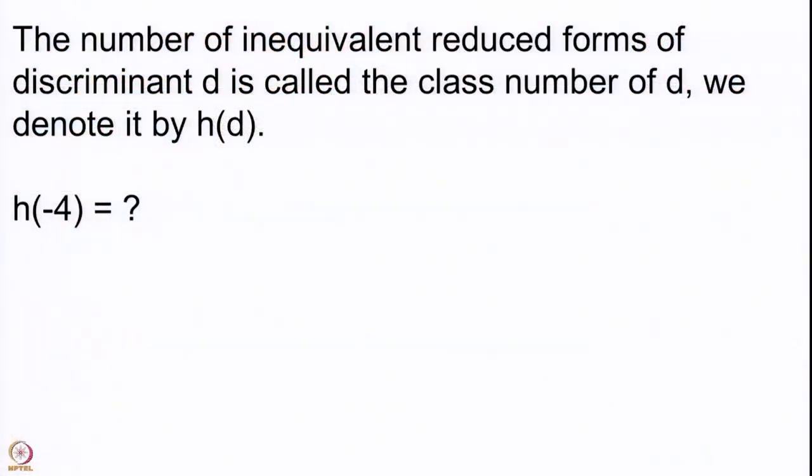This is a very important quantity. Given any such negative number, there is a certain field extension of the rationals associated to the number, and there is a quantity called the class group associated to this field extension. This class number that we are going to compute actually happens to be the cardinality of the class group. The class group's order can be computed very easily simply by looking at the number of inequivalent reduced forms of the discriminant d. This is a very important number; we denote it by h(d).